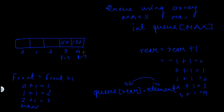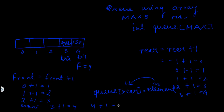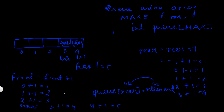You can't insert any new elements, but you can delete elements. Deleting two elements: the value of front is 3, so 3 plus 1 equals 4. Front becomes 4 and that element gets deleted. The value of front is now 4, so 4 plus 1 equals 5. Front becomes 5 and that element gets deleted. This is how a queue works — how elements are inserted into and deleted from a queue, and how we check for overflow and underflow conditions.